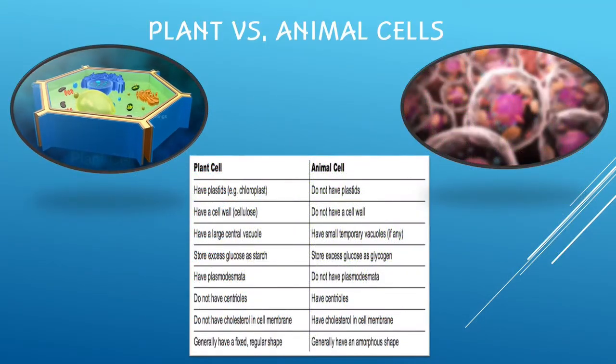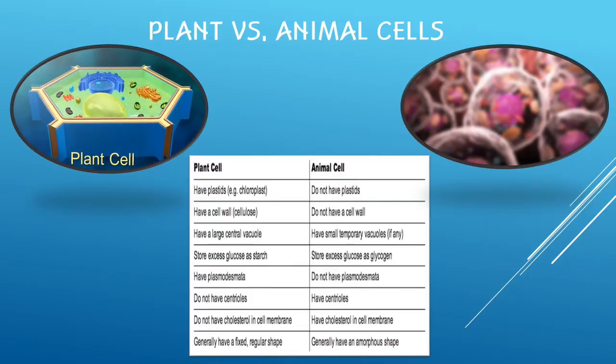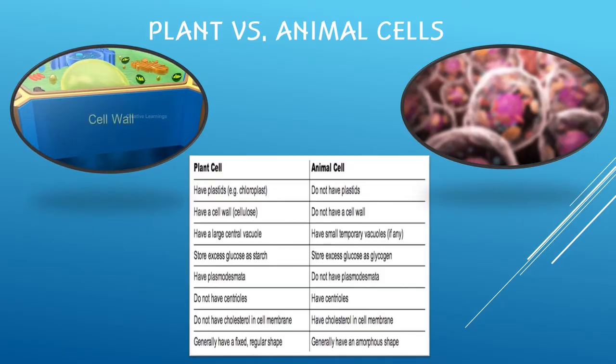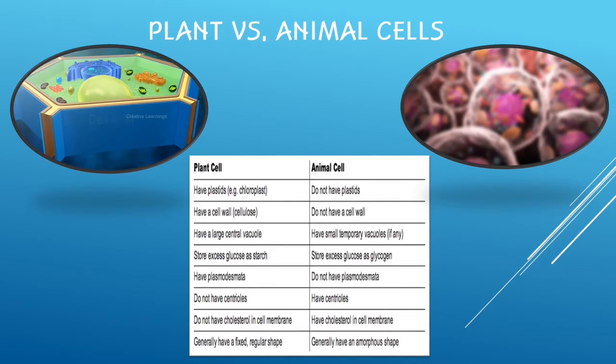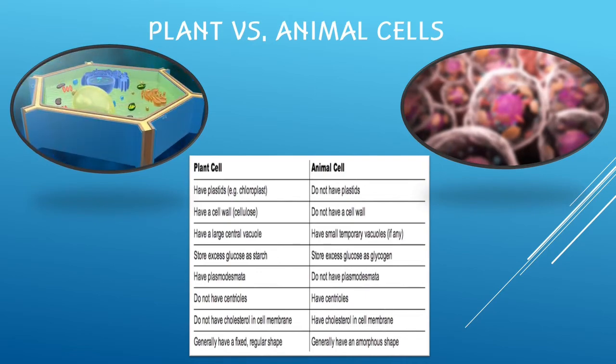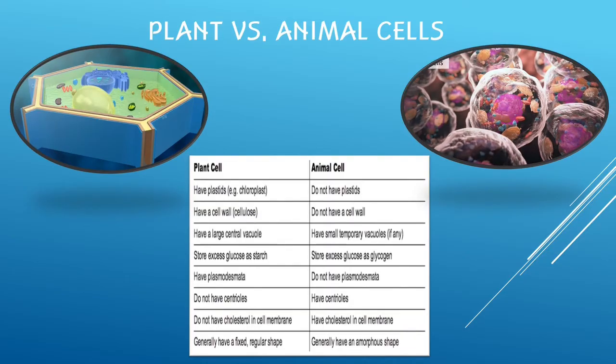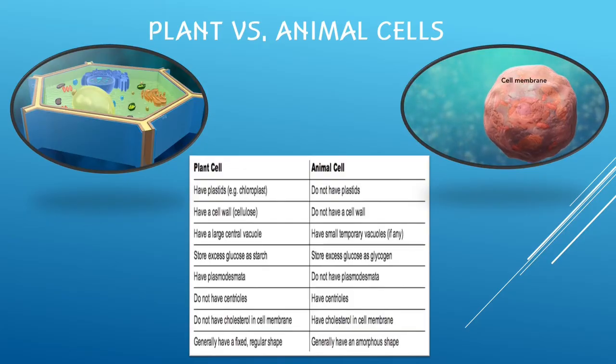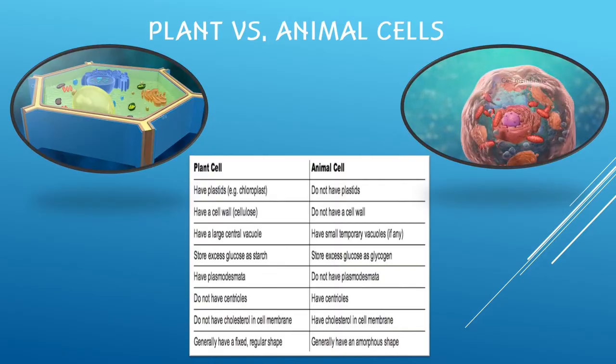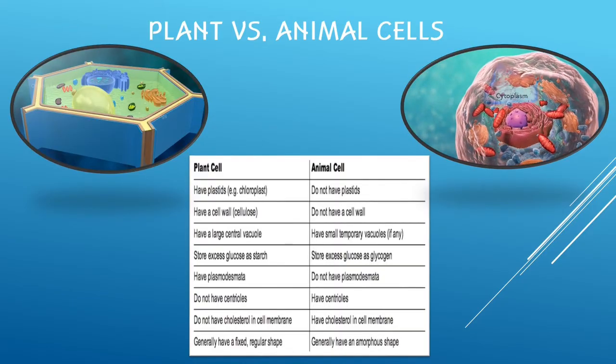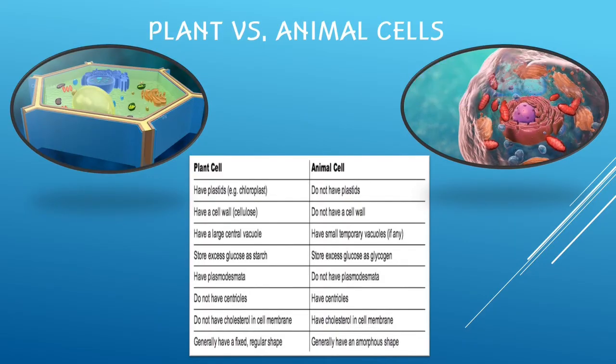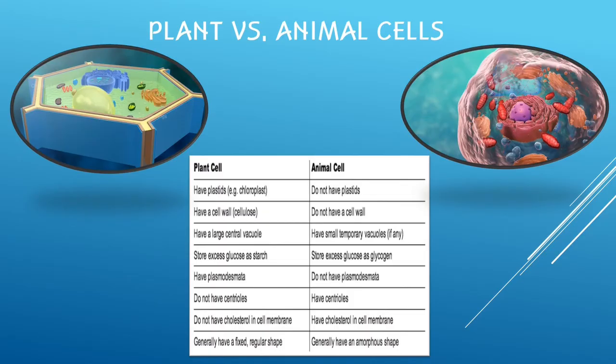Comparison between plant cells and animal cells. Plant cells have plastids or chloroplasts, cell walls, central vacuoles, and plasmodesmata, while animals do not possess all those. Animal cells have centrioles and cholesterol in cell membranes, while plants do not have it. Glucose is stored in plants as starch, while in animals, it is in glycogen form. Finally, plant cells have a fixed, regular shape, while animal cells have an amorphous shape.